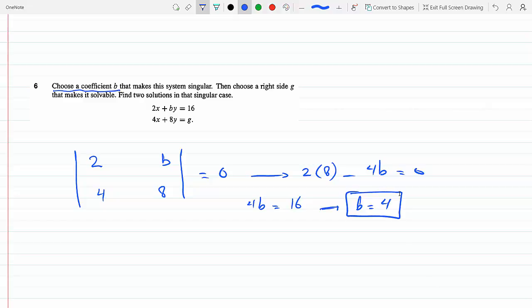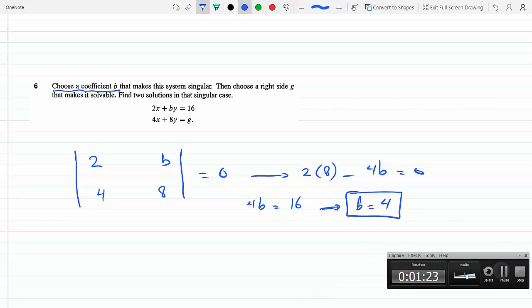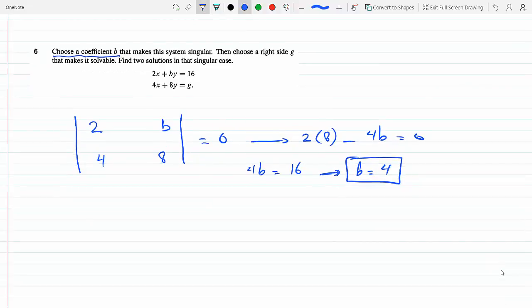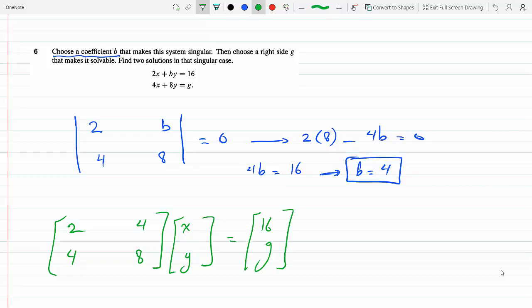The second part: having found that B is 4, we can rewrite the matrix as 2, 4, 4, 8. I'm going to change that system of equations into matrix format, so this coefficient matrix times the unknowns x, y equals 16, G. Now it's to find G so that it makes it solvable.